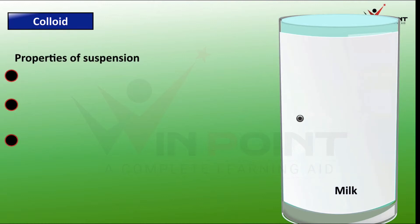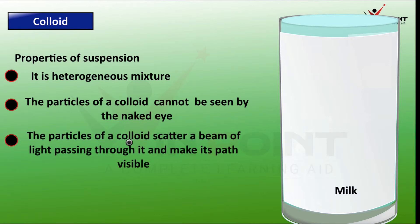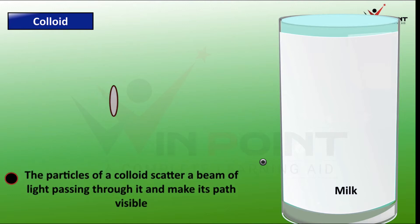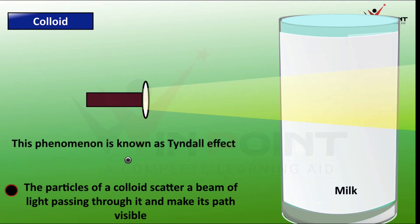The properties of colloid: First, it is a heterogeneous mixture — the properties are not the same everywhere and the particles are not uniformly distributed. Second, the particles of colloid cannot be seen by the naked eye — we cannot see any particles in milk. Third, the particles of colloid scatter a beam of light passing through it, making the path visible. When light is transmitted through milk, we can see the path — this is known as the Tyndall effect.